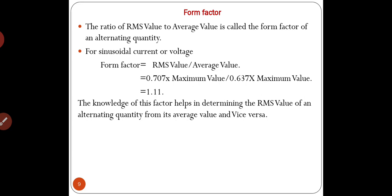Form factor: the ratio of RMS value to average value is called the form factor of an alternating quantity. For sinusoidal current or voltage, form factor = RMS value / average value = (0.707·Im) / (0.637·Im) = 1.11. The knowledge of this factor helps in determining the RMS value of an alternating quantity from its average value and vice versa.